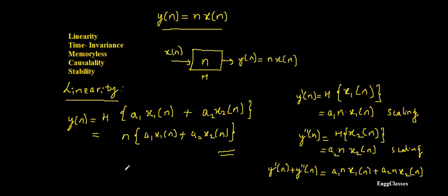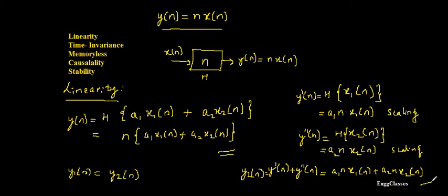Comparing the two outputs, both are equal. Hence the given discrete time system is linear in nature. The system follows the property of linearity.